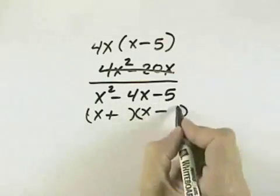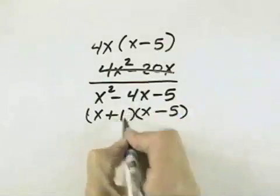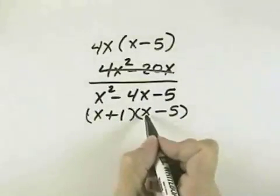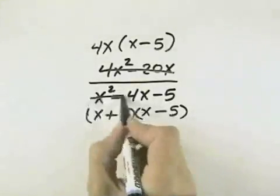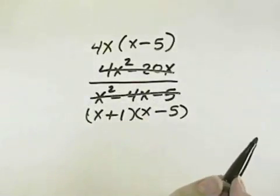I can bet that the 5 is going to go with a minus to be a like factor with the numerator, but let's see. We get a positive 1x in the middle, and a minus 5x on the outside is a negative 4x, so that is the correct factored form.